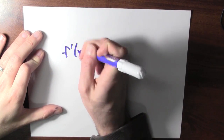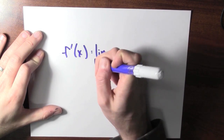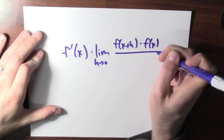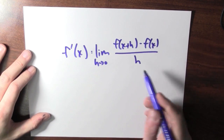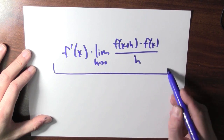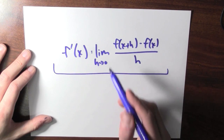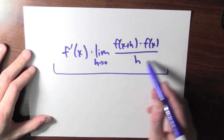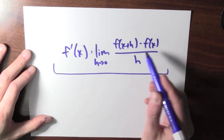We can package together all of those ratios of output changes to input changes as a single function. f prime of x is the limit as h goes to 0 of f(x+h) minus f(x) over h. And this limit doesn't just calculate the derivative at a particular point — this is actually a rule for a function. The function is f prime of x, and this tells me how to compute that function at some input x.